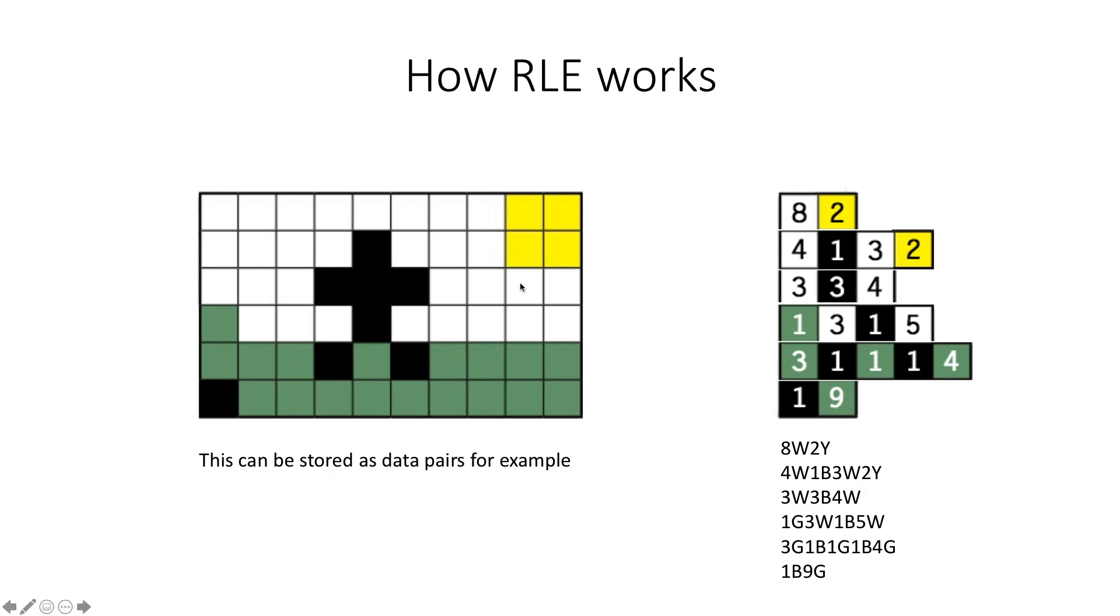In the next line it's got four white, one black, three white, and two yellow. So in that way, you can actually represent the whole entire image using these data pairs.